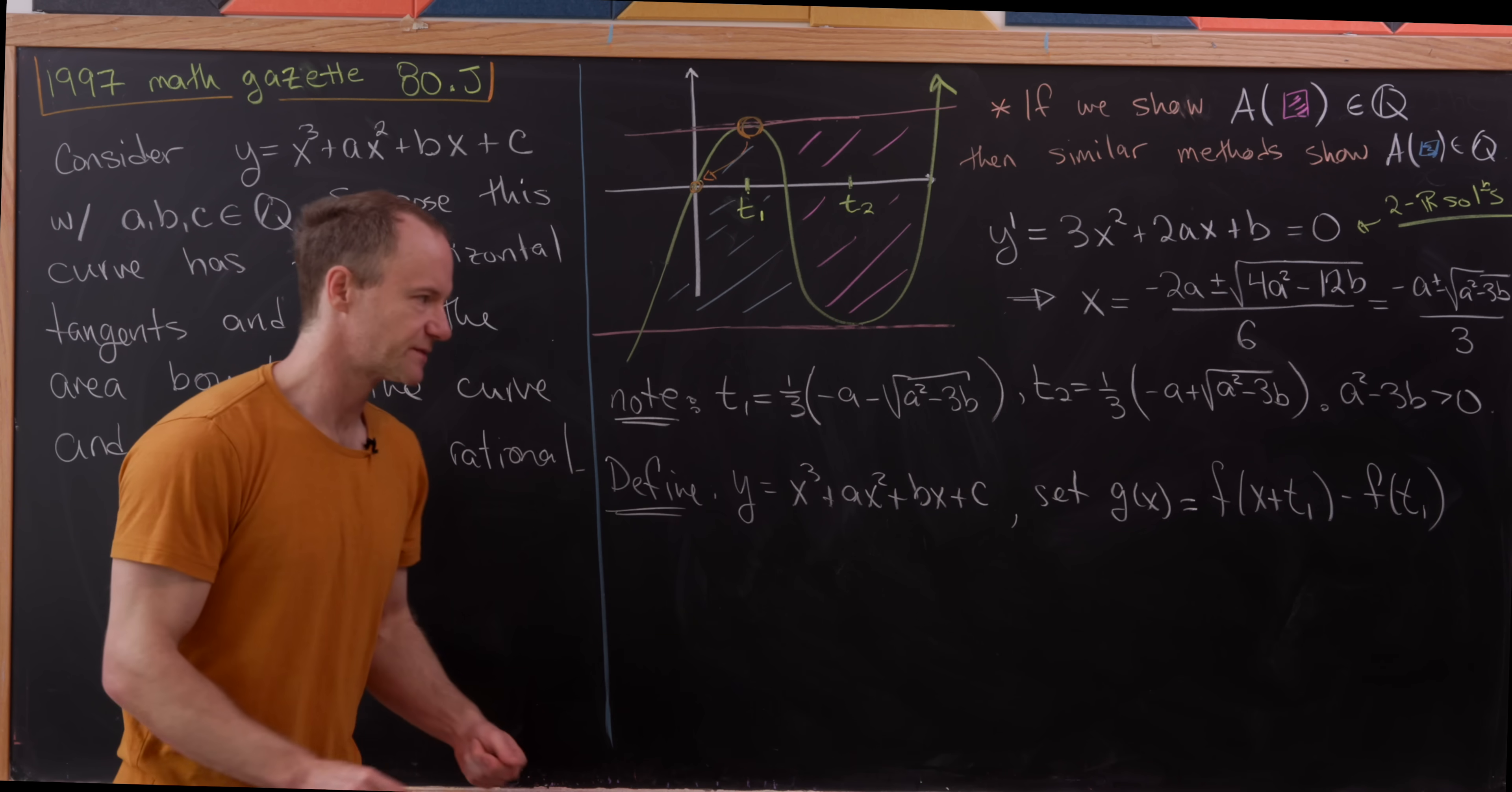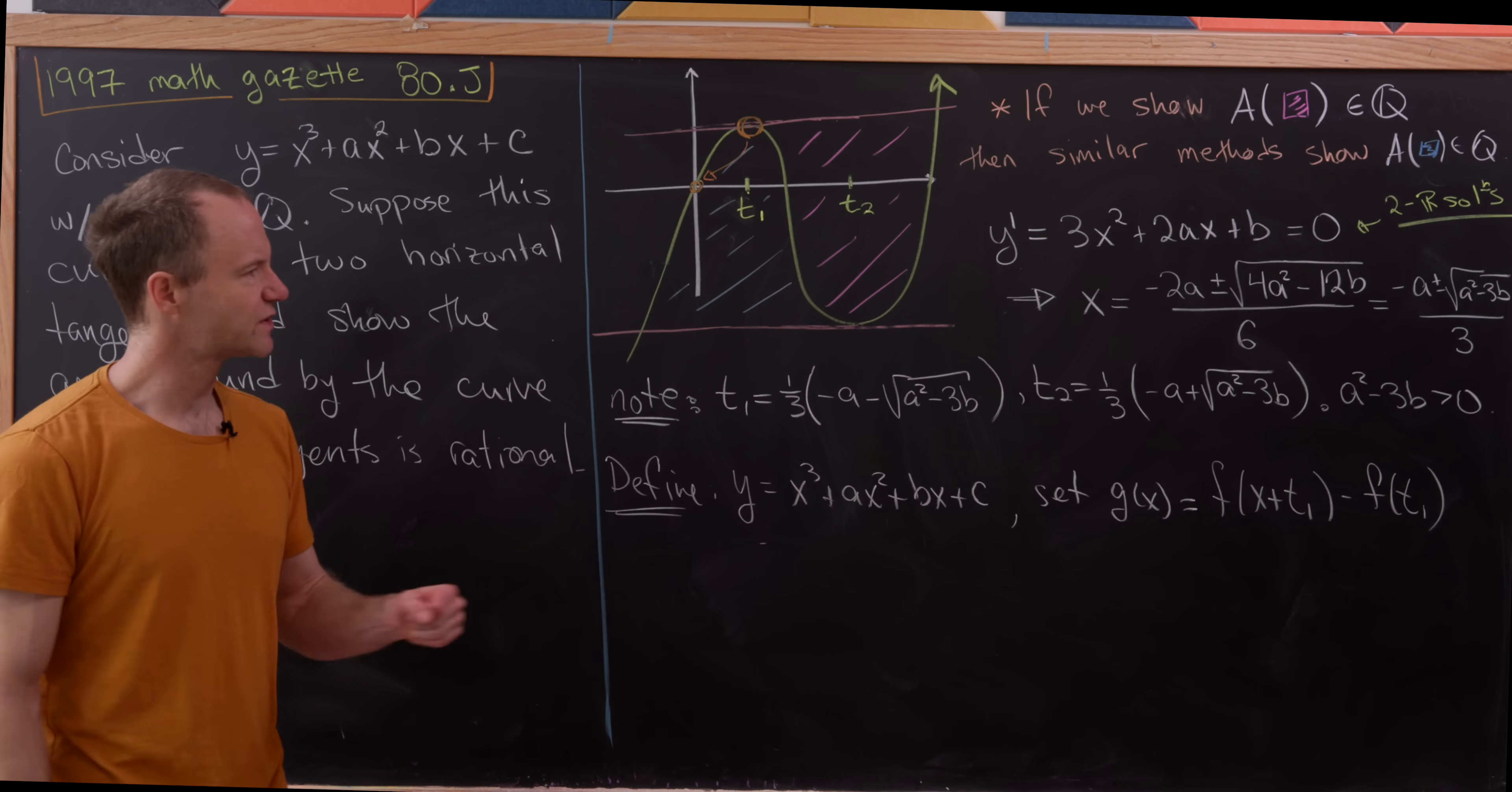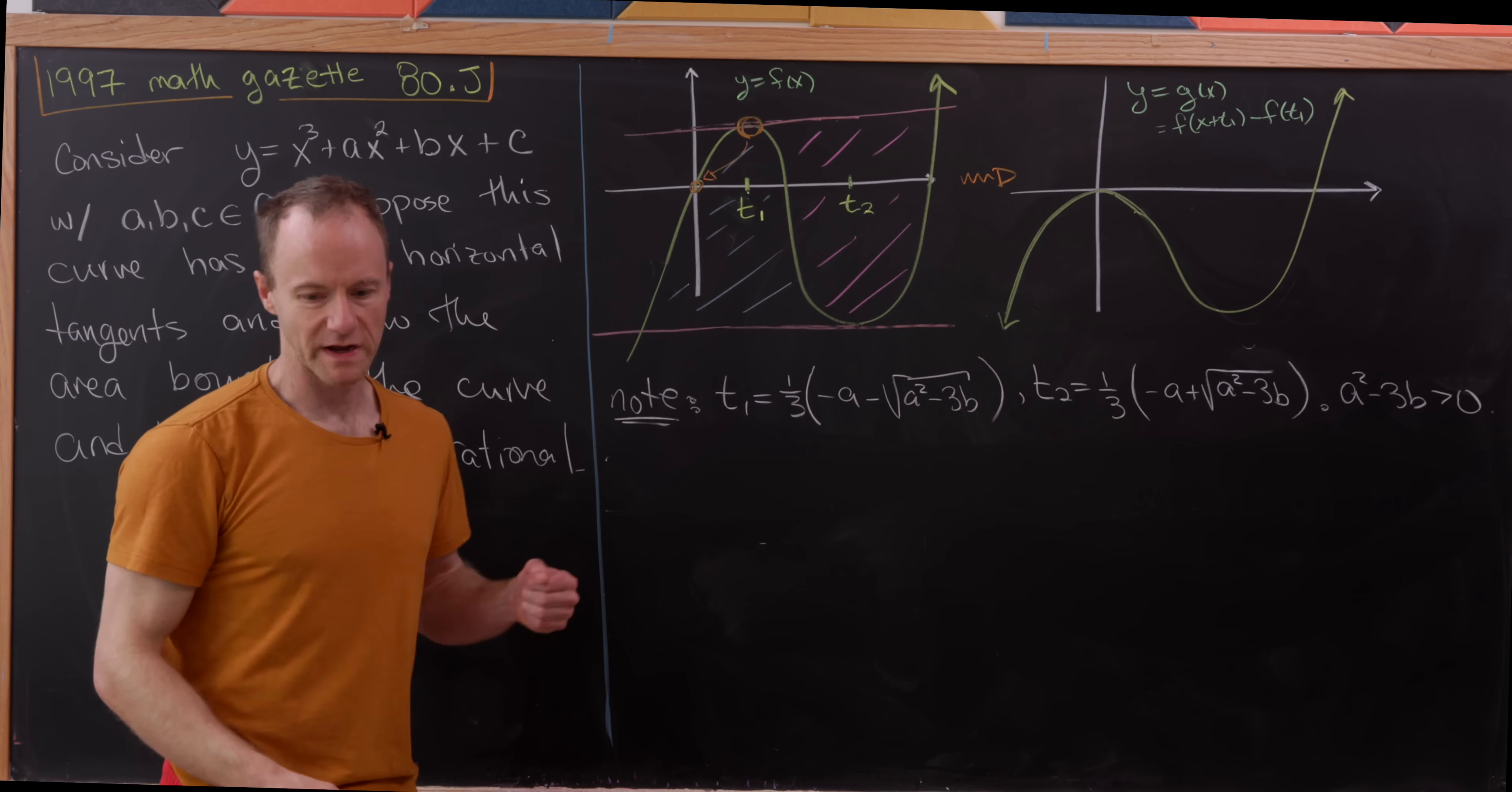Now, let's observe if we plug x equals zero into this, we most definitely get zero because we have f of t1 minus f of t1. So now let's maybe get our shifted graph up on the board, and then we'll do the next couple of steps.